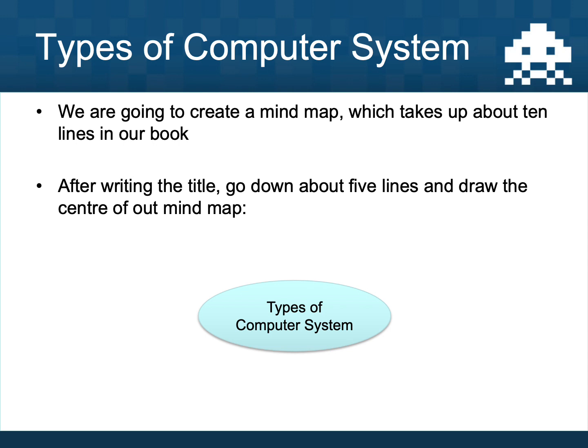Now that we understand what a computer system is, we can begin to think about the different types of computer system we might have come across. Remember a computer system is anything that takes in data, processes it, and outputs useful information. Draw the middle of a mind map in a bubble and write 'types of computer system' inside it, with five or six different lines coming off of your mind map. Pause the video, draw the centre bubble, and add the heading 'types of computer system'.